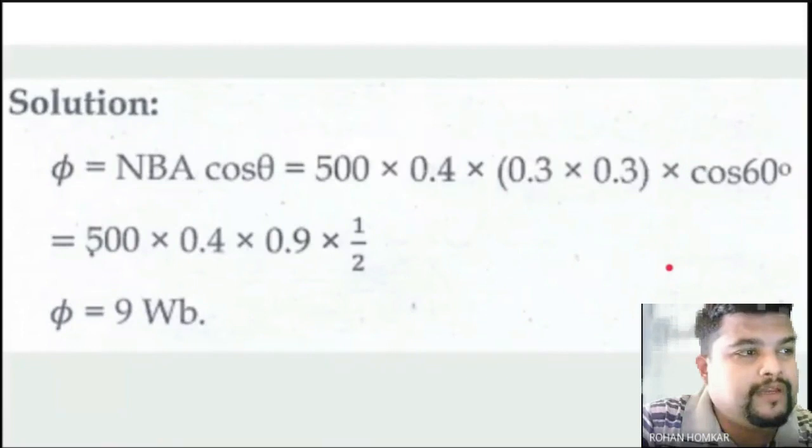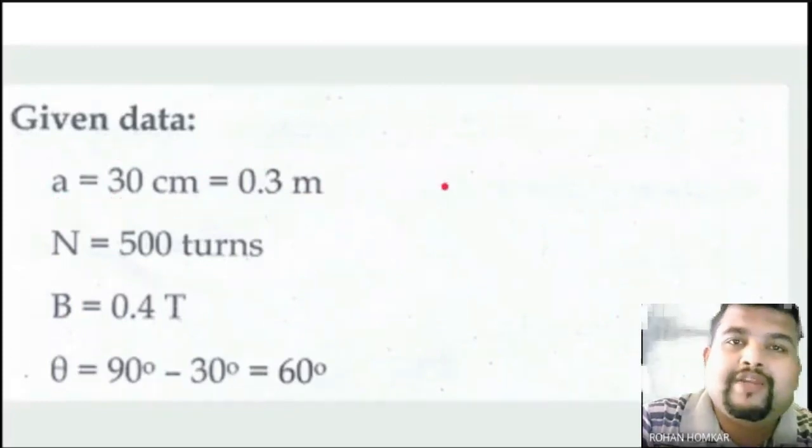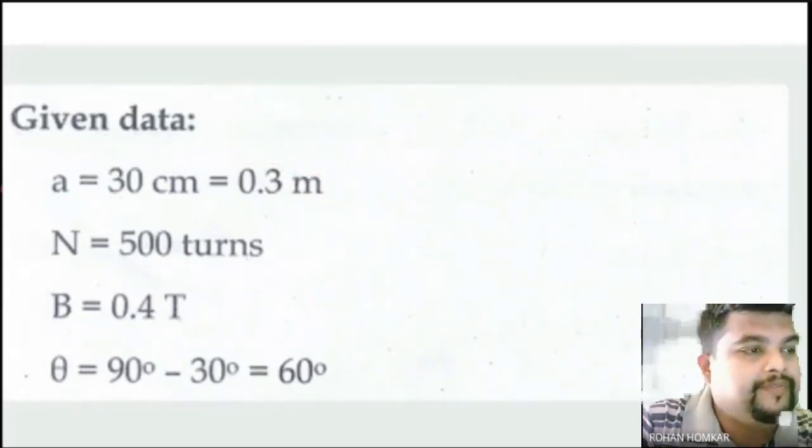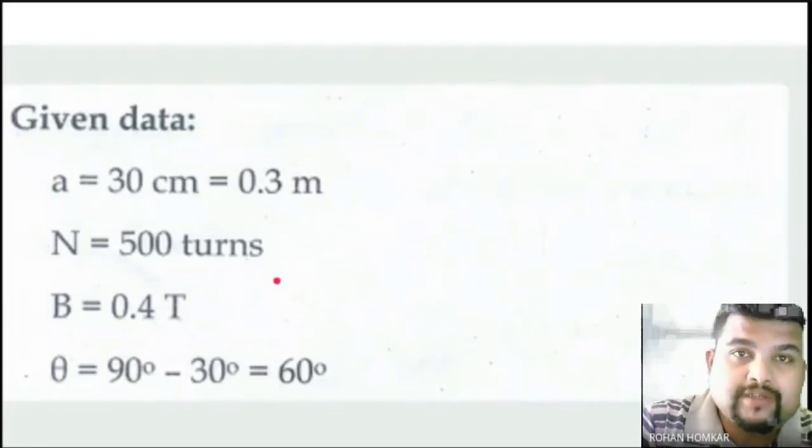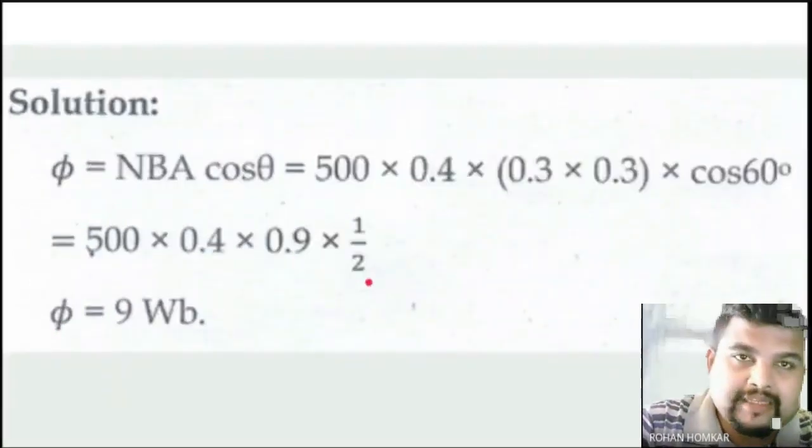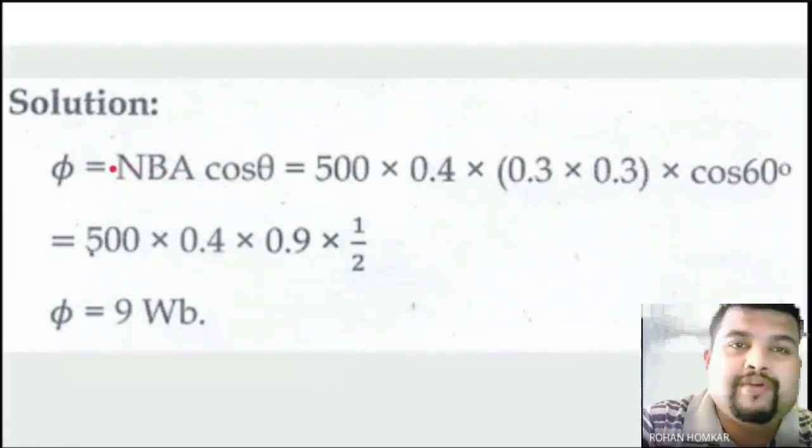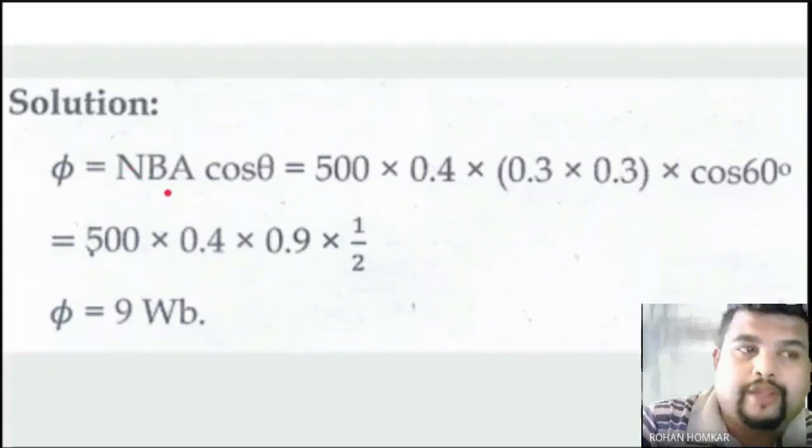So we are solving some numerical in which first we got the data about the area. So if we got the length, we can use square area. For square area we have a formula. Then we have number of turns of the winding by which that electromagnet is being created. Then we have the flux density and we have the angle. So using the formula which we have earlier seen, that NBA cos theta, where N is nothing but for that number of turns of that particular electromagnet coil.